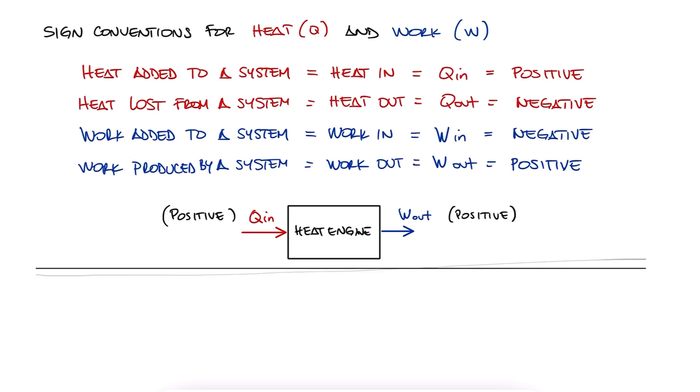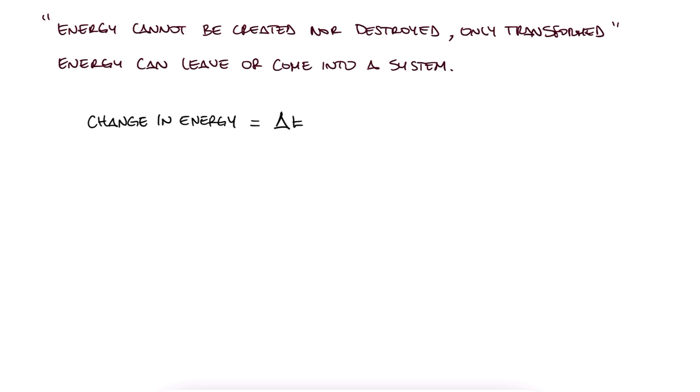Alright, so even though you've probably heard that energy cannot be created nor destroyed, only transformed, this doesn't mean that energy cannot leave a system or come into a system. The change in energy within our system, or in general within a control volume, is the change of internal energy plus the change of kinetic energy and the change in potential energy. And since this change in energy can only result from heat transfer and work coming in or out of the system, we equate this to Q_net minus W_net, again following the convention we just went over.